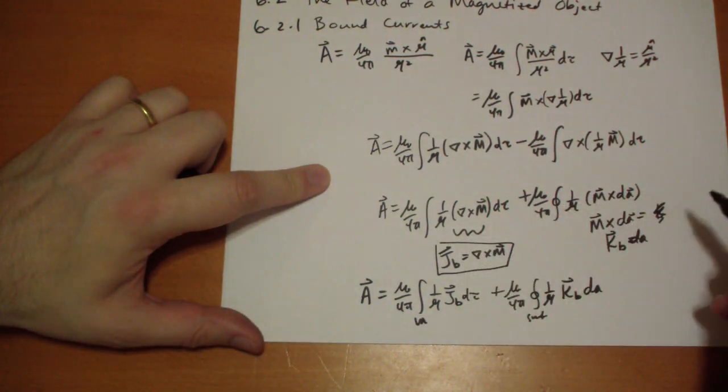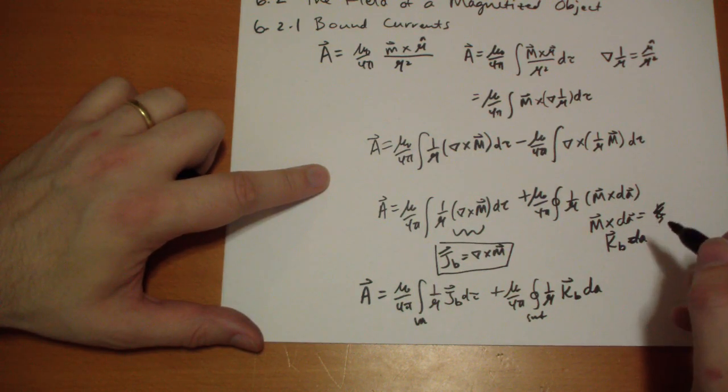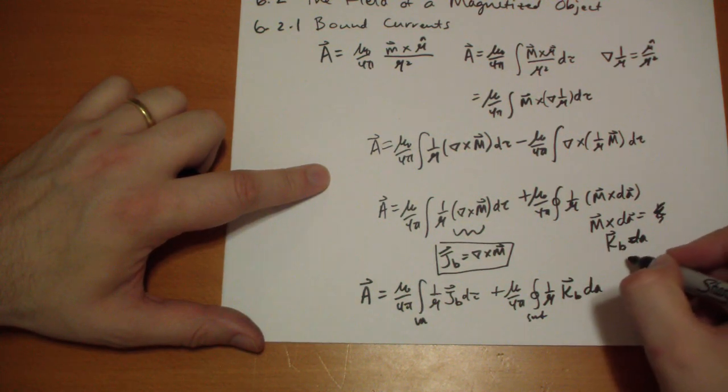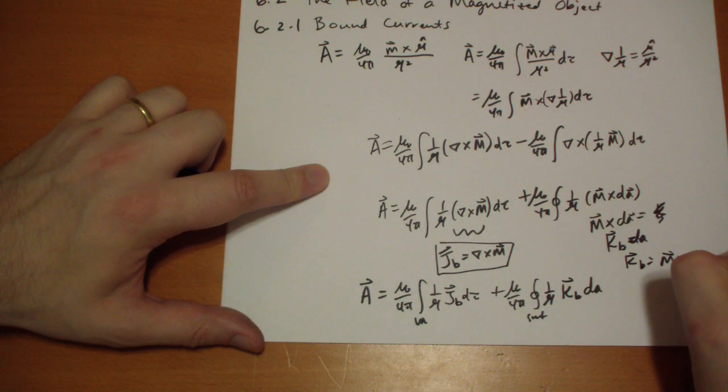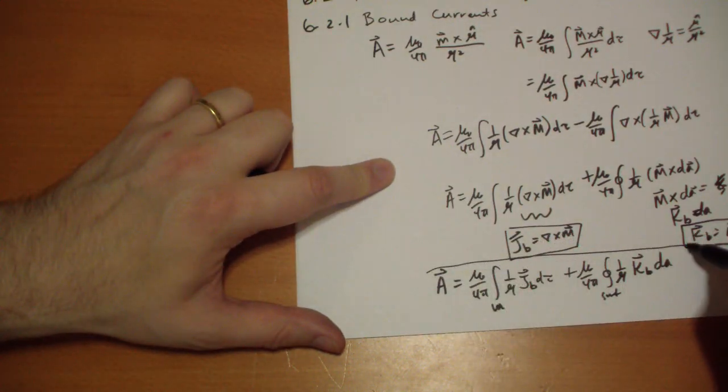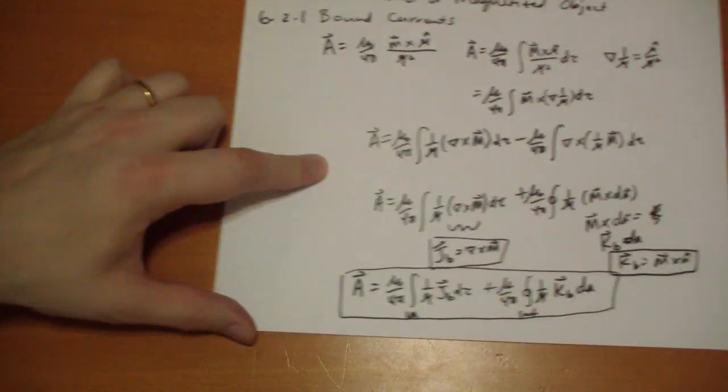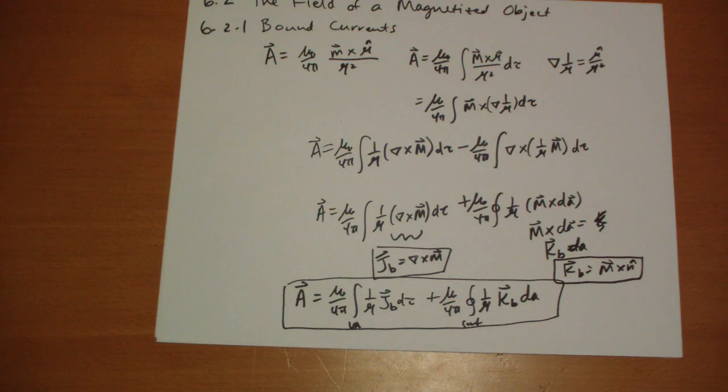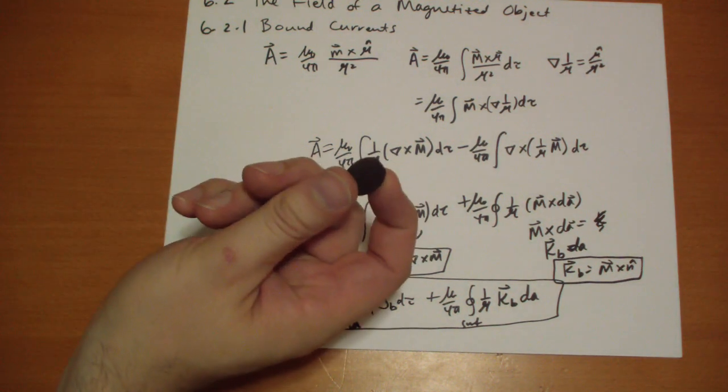So, what this says, so this is an important rule, m cross d-a, so Kb is equal to M cross the normal hat. And this guy is important. So what this says is, when you have an object with magnetization, for example, my magnet, okay, this is behaving